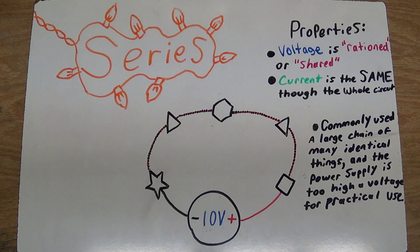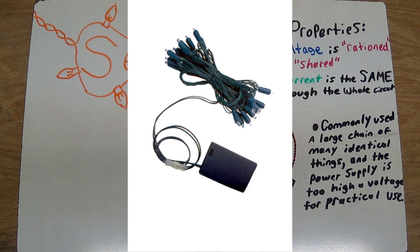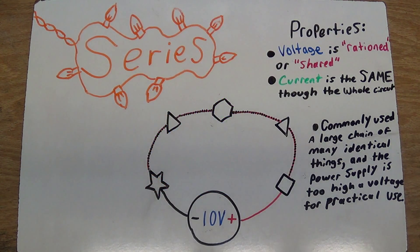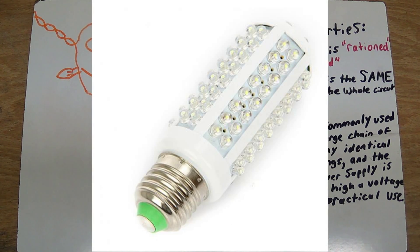Now these types of circuits are commonly used in large chains of many identical things, where the power supply is too high a voltage for powering any one of those parts individually. You'll see this type of circuit a lot, with Christmas lights during the holidays, and LED strip lights, and other types of long chains of things. You'll also see this technique used a lot with screw and LED bulbs, especially the cheaper variety.